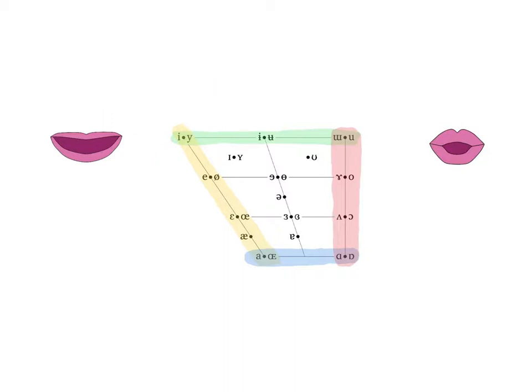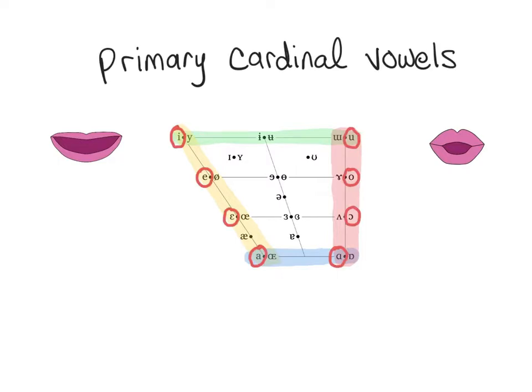The first eight cardinal vowels are called the primary cardinal vowels. These are vowels that obey certain articulatory and acoustic tendencies that languages frequently make use of. One of those tendencies is that front vowels tend to have spread lips, and back vowels tend to have round lips. This is because the second formant of a vowel, its F2, is dependent on both its frontness or backness, and its lip spreading or lip rounding.